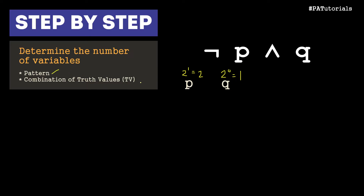Next, we determine the combination of truth values, wherein the formula is 2 raised to n, where n is your number of variables. So in this case, we have 2 raised to 2, which is equal to 4. That means we have 4 combinations of truth values.